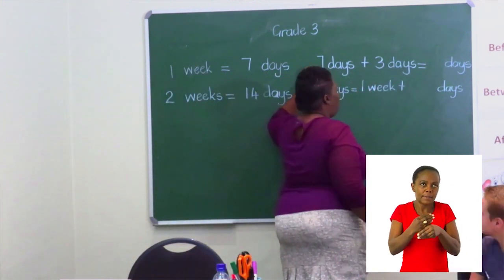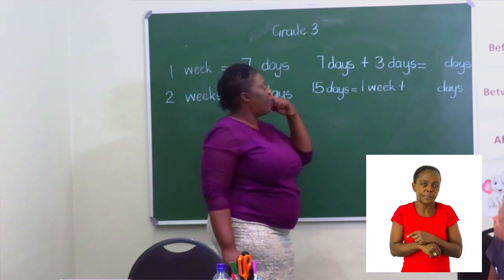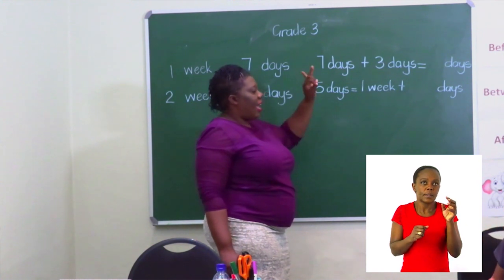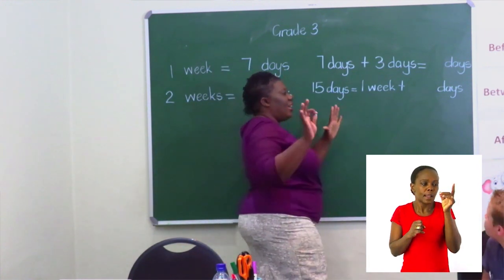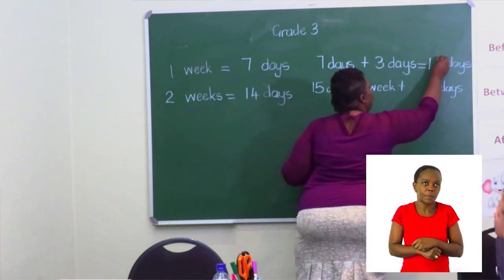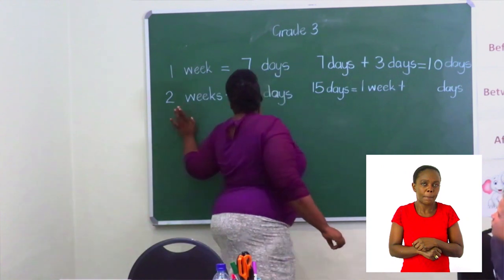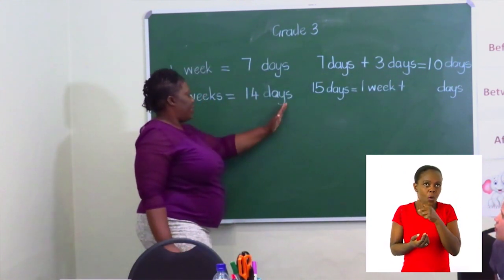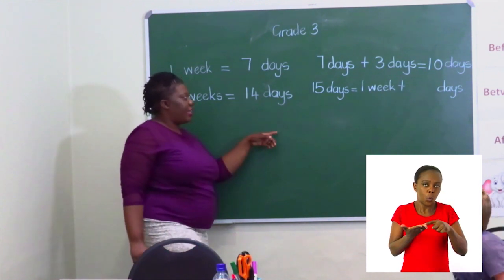Let's count on — we've got seven, let's put it in our head and count on: eight, nine, ten. We get ten days. Two weeks is equal to 14 days.